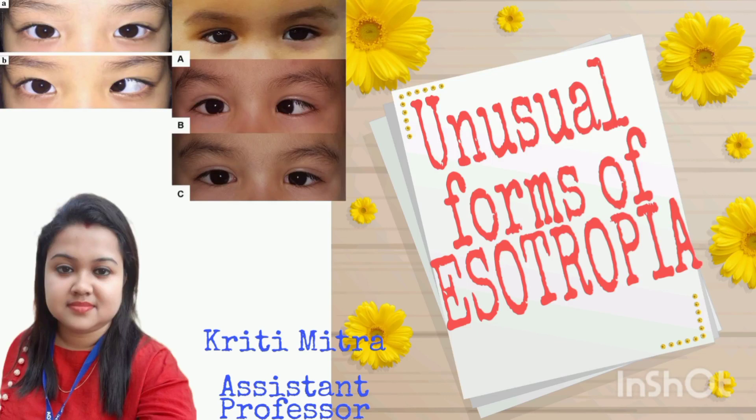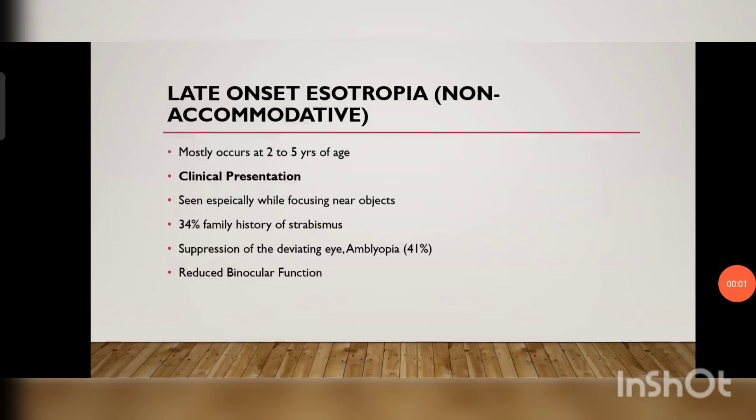Unusual forms of esotropia. Coming to non-accommodative late-onset esotropia. The term suggests that esotropia has appeared late, so it mostly occurs between 2 to 5 years of age. It is seen especially while focusing on near objects. These children definitely have a family history of strabismus — 34% family history of strabismus is there.